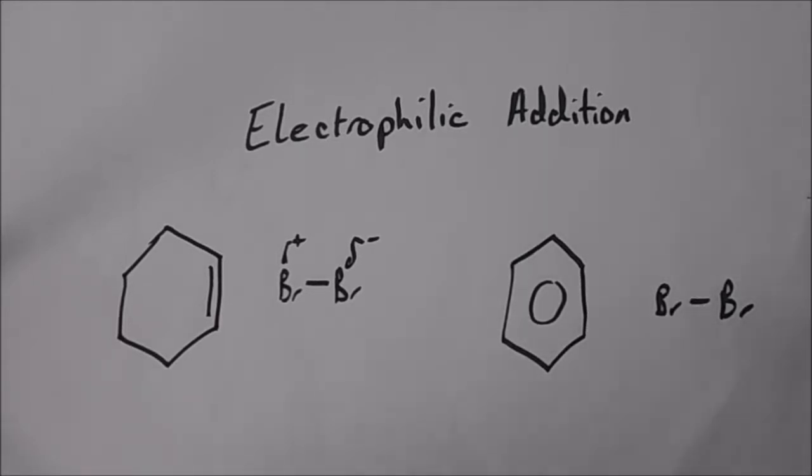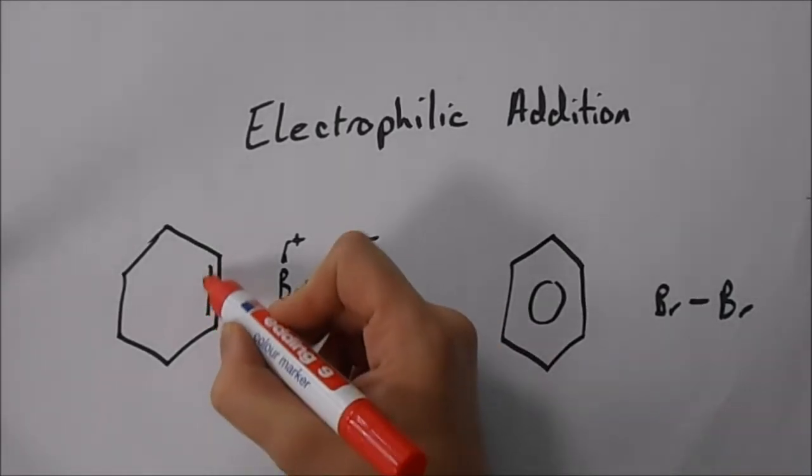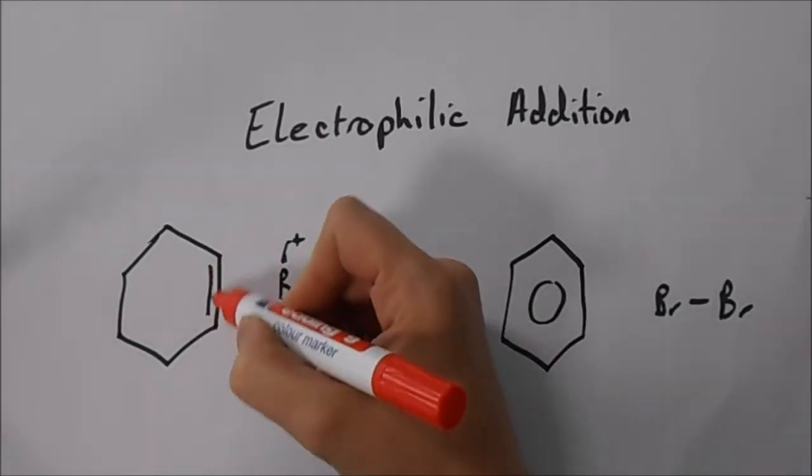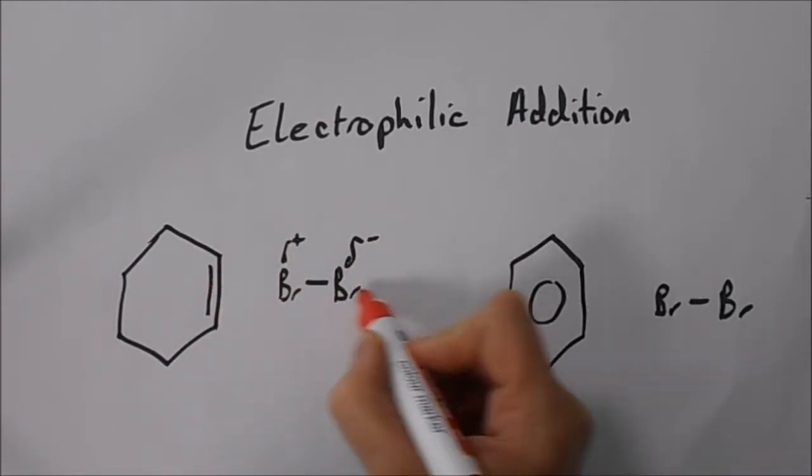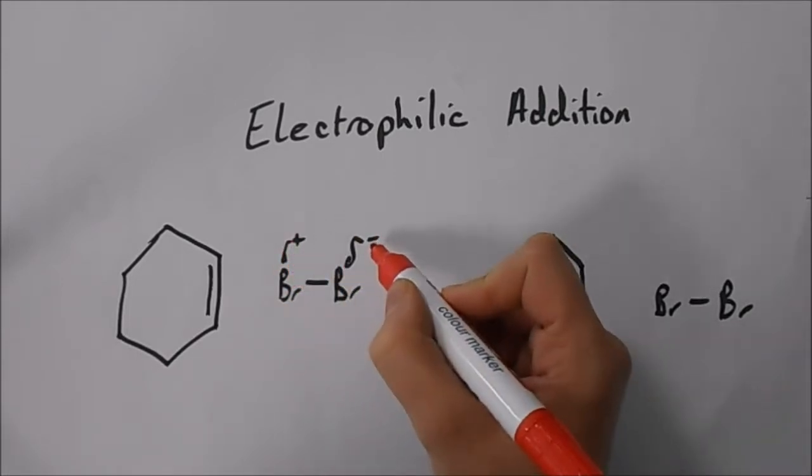As you may remember, an electrophilic addition reaction works because the electrons in the double bond here are localized and they polarize the Br2 molecule so that we have a delta plus and a delta minus.